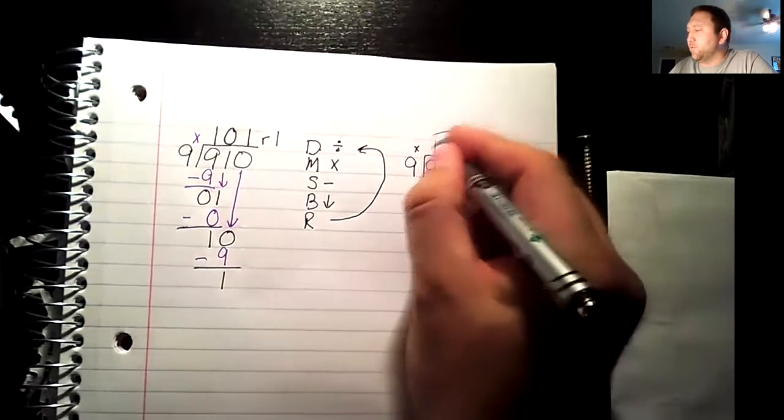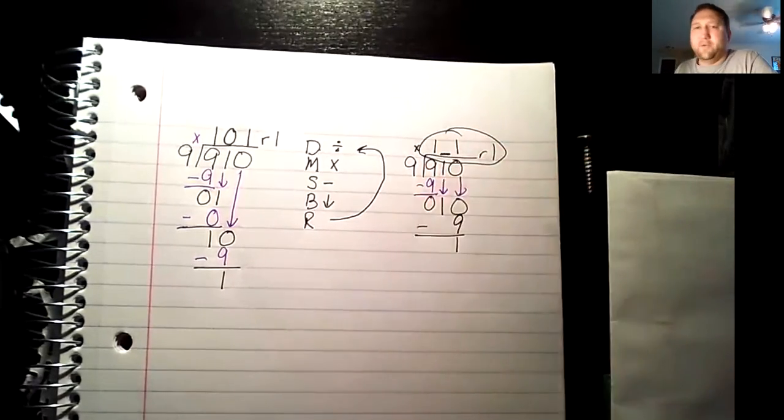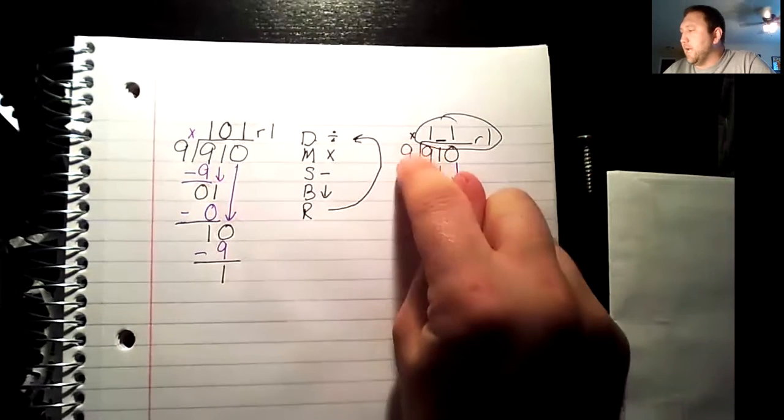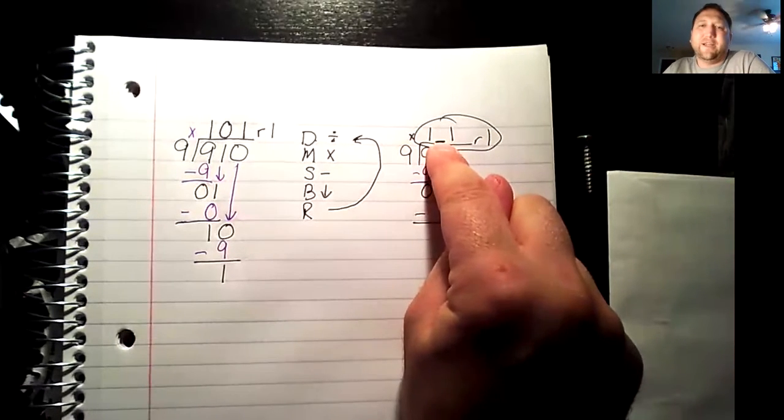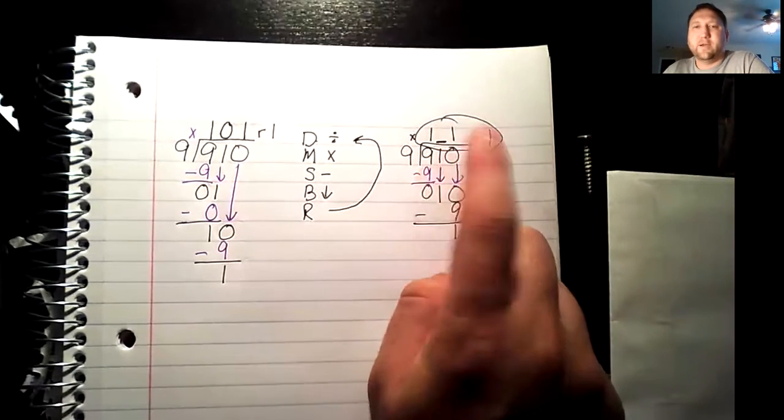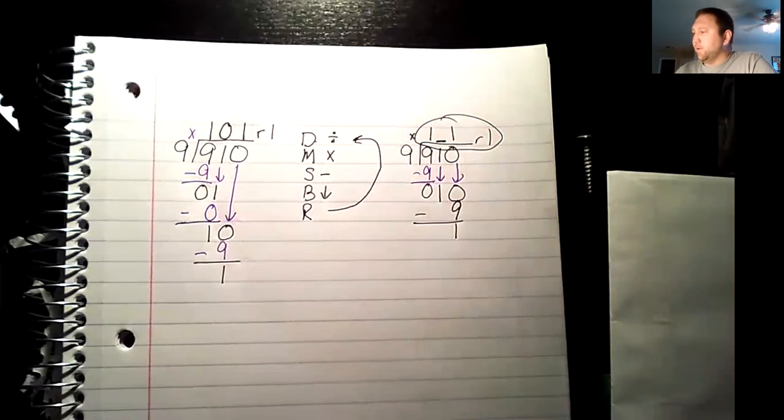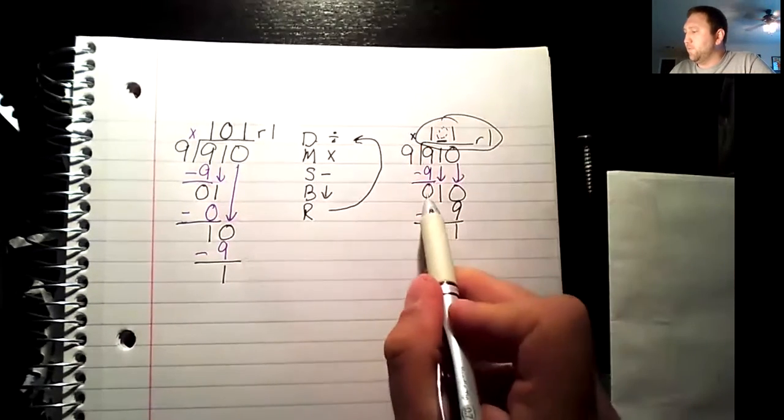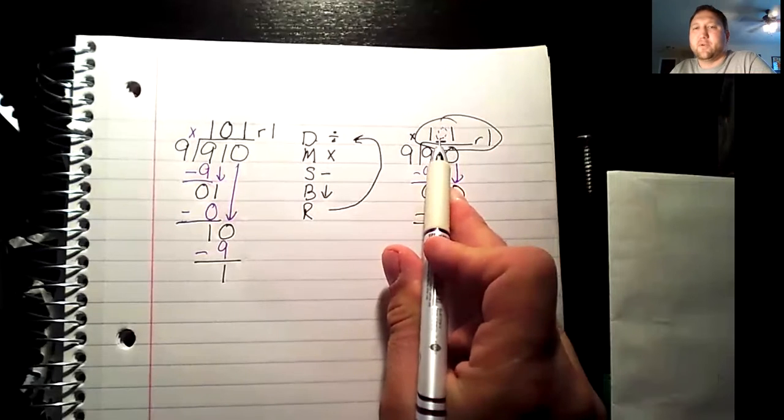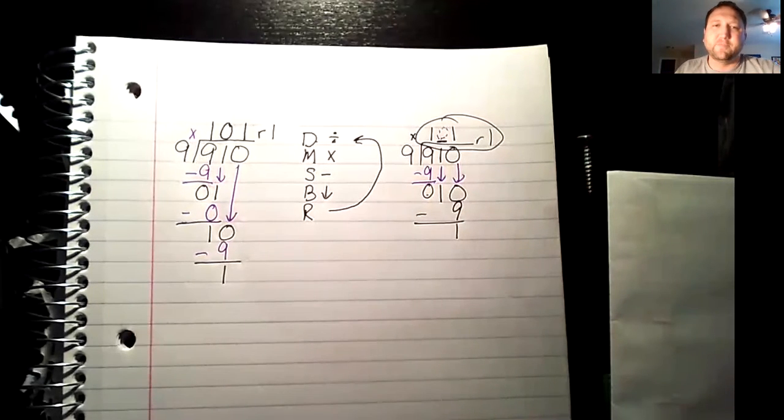They end up coming up with 11 remainder 1. The problem is place value. They forgot about that number in the middle. Also, if you double check, 9 times 11 is 99 plus 1 is only 100, so therefore I did not get the right answer. So what we have to make sure we remember is every time we try to do something, we have to make sure we write a number in that place. That's another one of the mistakes that I see students make sometimes.